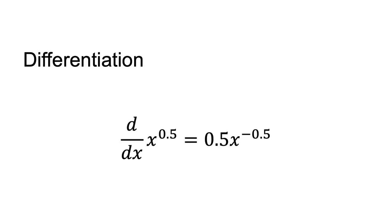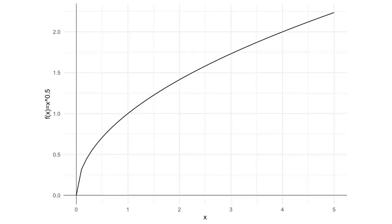As another example, d/dx of x to the power of 0.5 is equal to 0.5 times x to the power of minus 0.5. You can see from this that for any value of x greater than 0, the derivative of x to the power of 0.5 is greater than 0, signifying that the function f of x equals x to the power of 0.5 is increasing and has positive slope. The function is not defined for x less than 0, and you can see that x to the power of 0.5 is increasing with positive slope when x is greater than 0 in this plot.